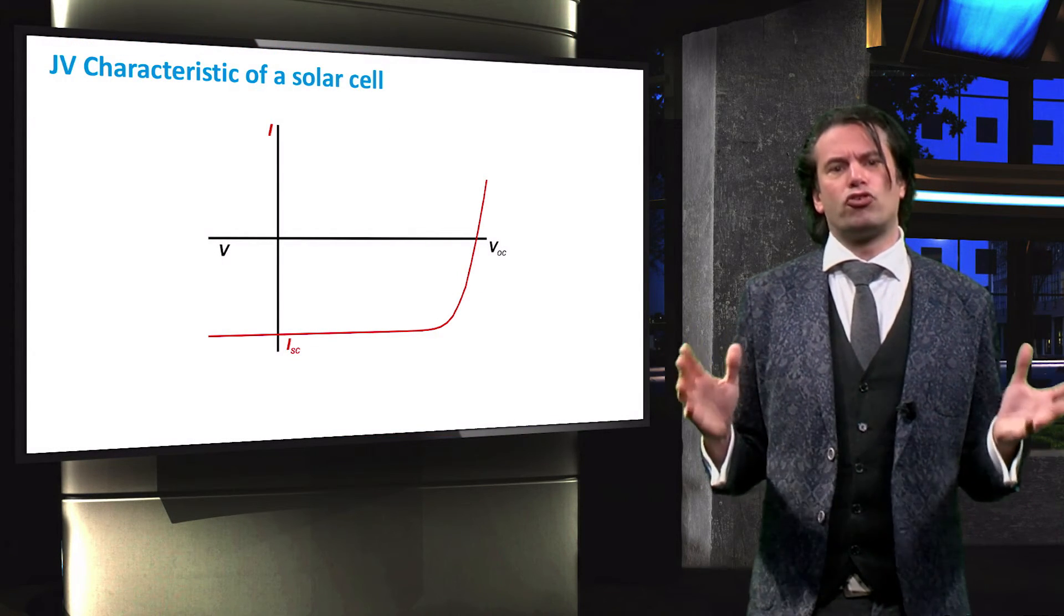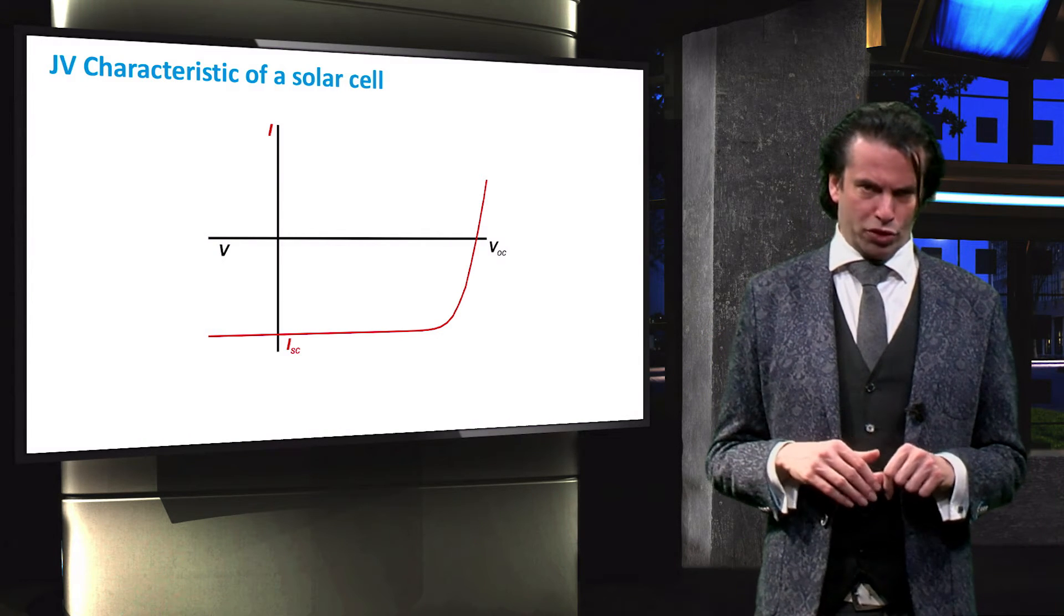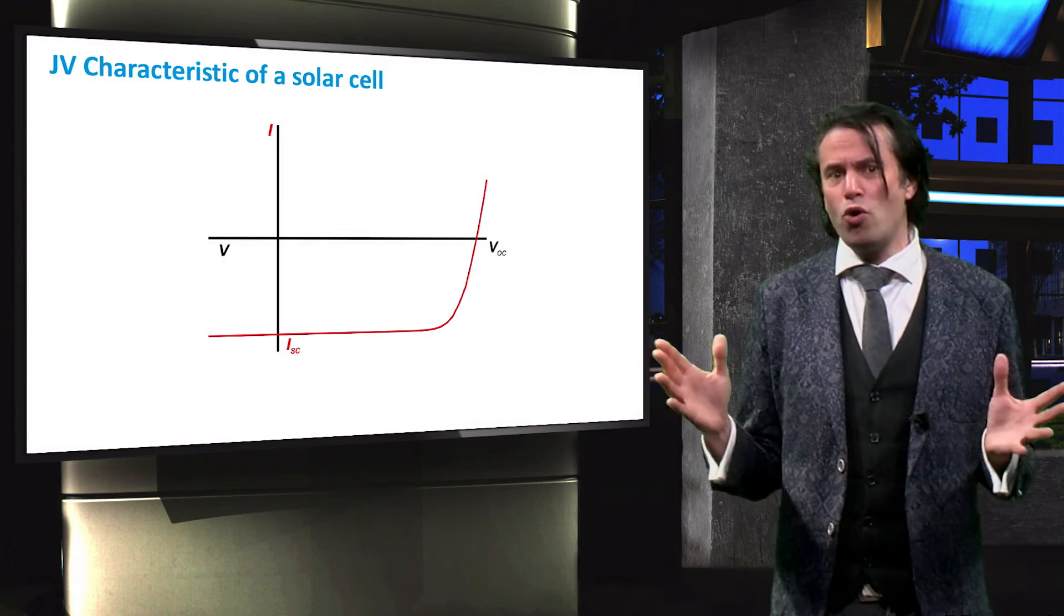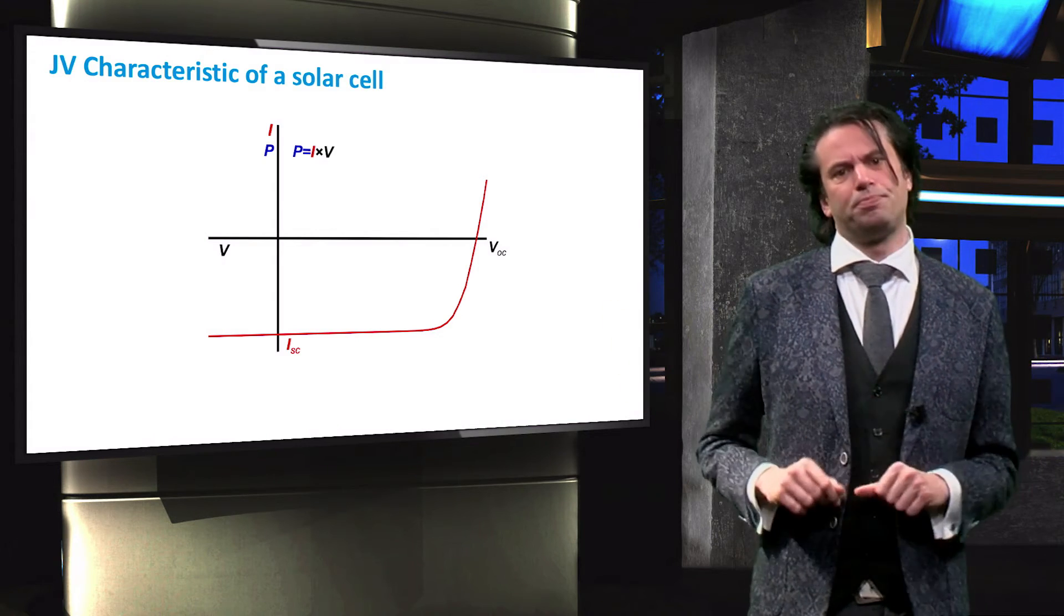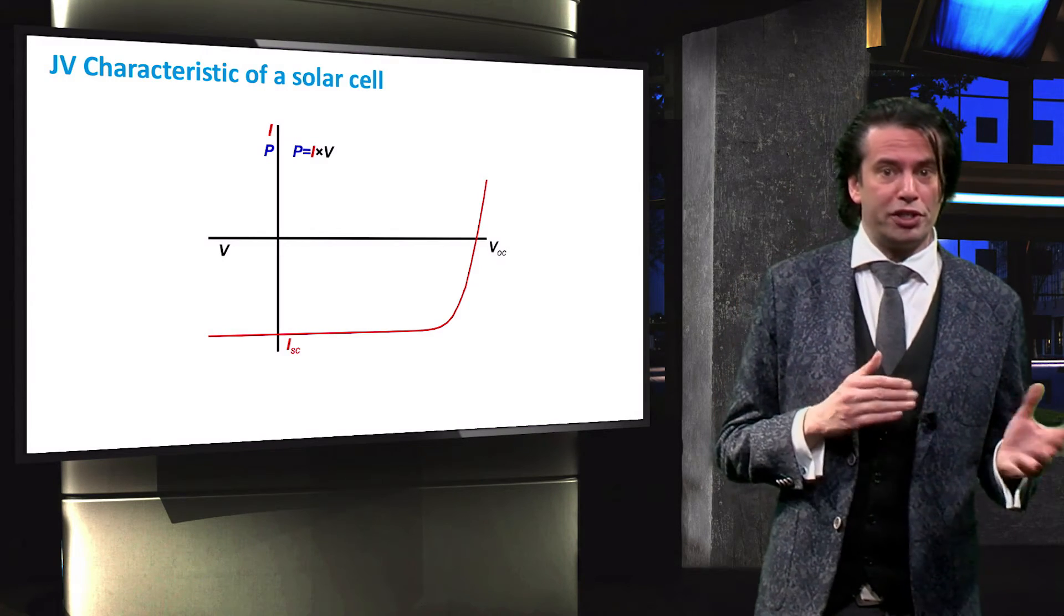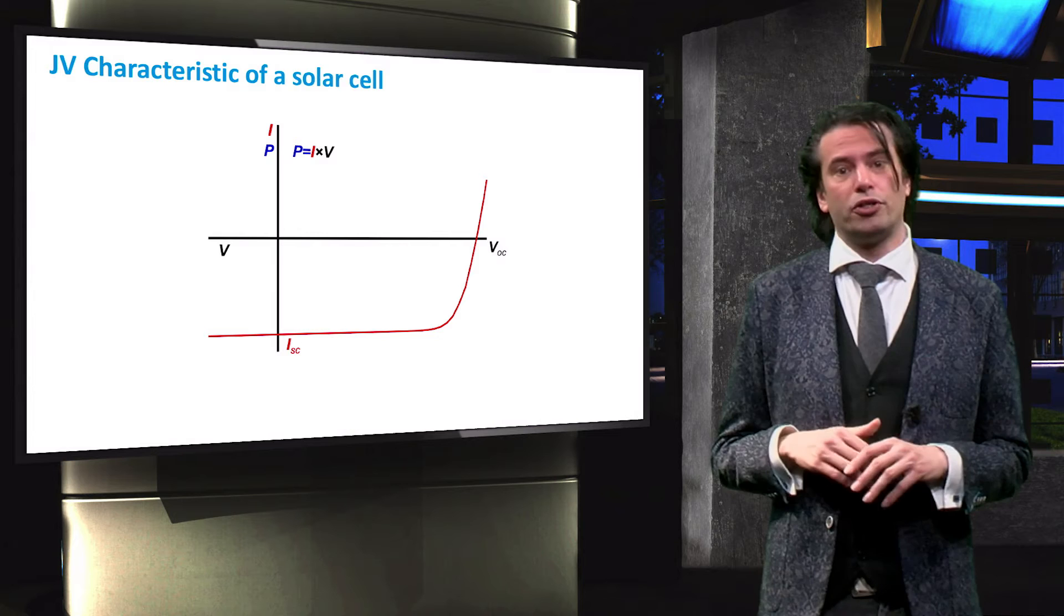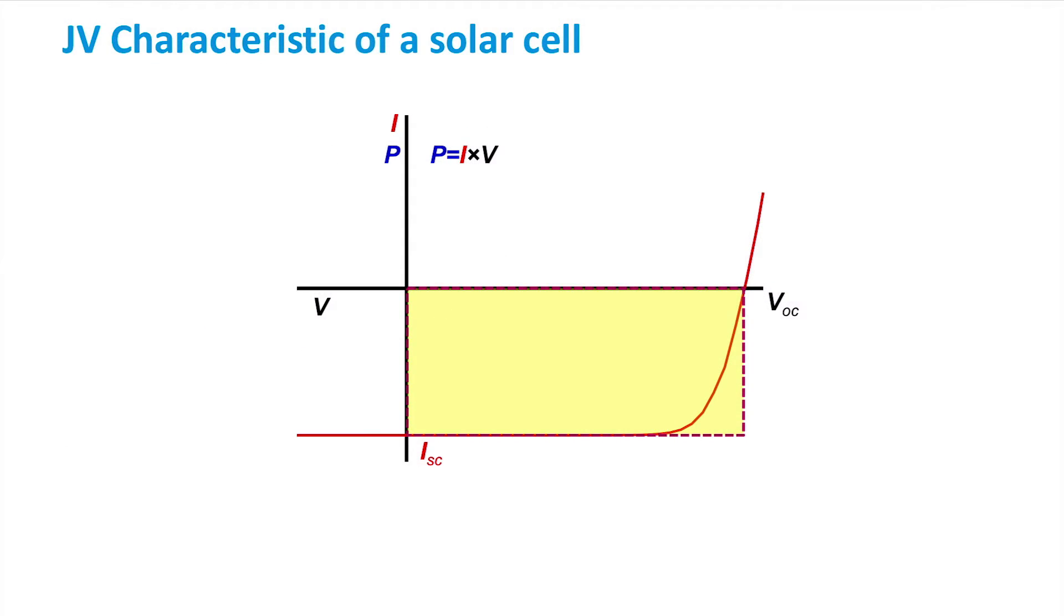Let's look at this curve a little further and consider the power output of a solar cell. You should know that the power is equal to the product of the current and voltage. We will represent the product of the open-circuit voltage and the short-circuit current with a yellow box. This power is greater than the maximum power that a solar cell can produce. However, it will be useful to calculate the solar cell's efficiency.